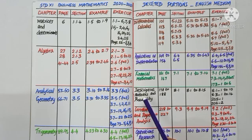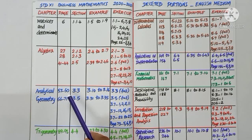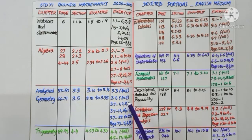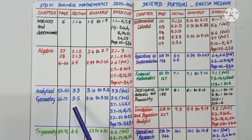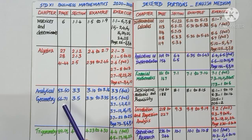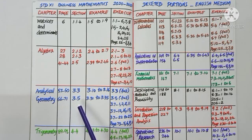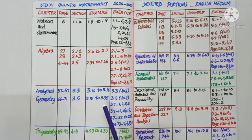Chapter 3: Analytical Geometry. Page numbers 57 to 66 — the Pair of Straight Lines section 3.3 is deleted. The related examples 3.10 to 3.16, and exercise 3.3, are fully deleted. Again, we have the conic section parabola. On page number 66 to 71, section 3.5 is deleted. Examples 3.31 to 3.35, and the full exercise 3.5, are deleted.